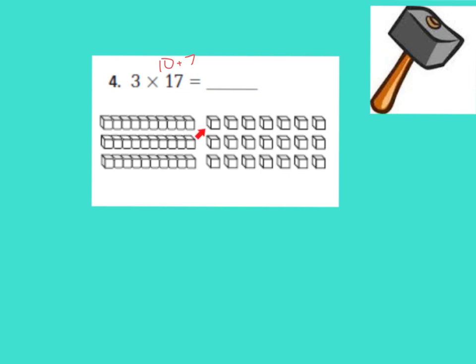So 3 tens for our 3 times 10. And over here, we have 3 rows of 7 ones. So it just looks a little bit different than our array, but it's the same thing.